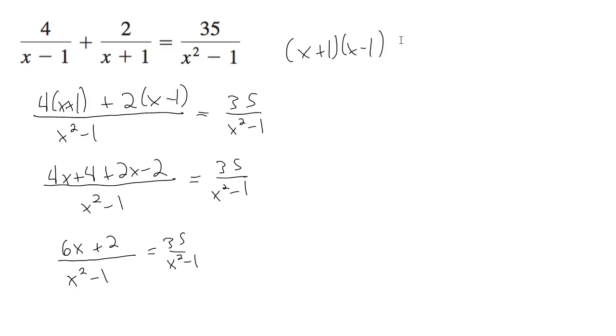So because we have the same denominator on the bottom, we just drop these and we're left with 6x plus 2 equals 35.